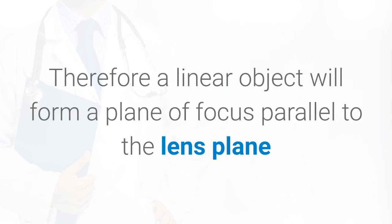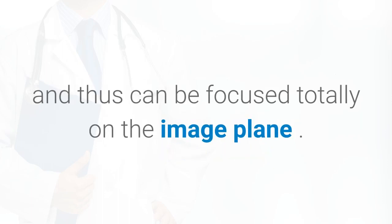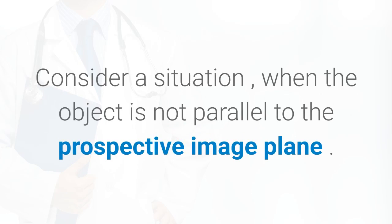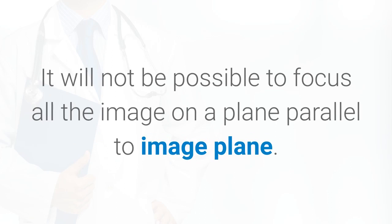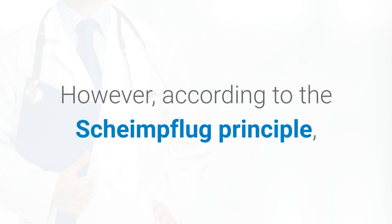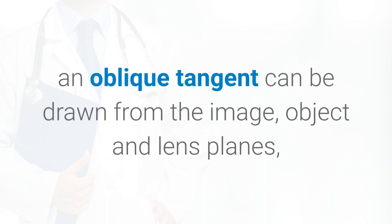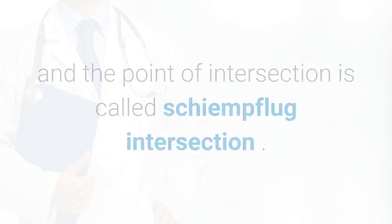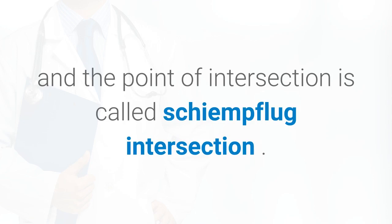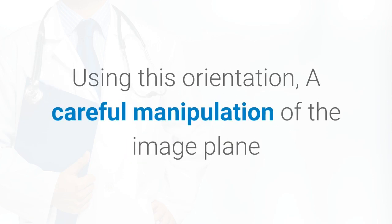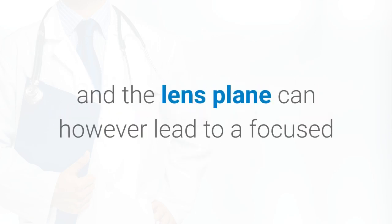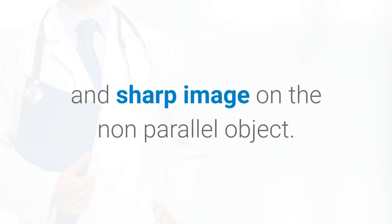In an ideal scenario, the lens plane and the image plane are parallel; therefore a linear object will form a plane of focus parallel to the lens plane and can be focused totally on the image plane. When the object is not parallel to the prospective image plane, it will not be possible to focus all the image on a plane parallel to the image plane, leading to image distortion. However, according to the Scheimpflug principle, an oblique tangent can be drawn from the image, object, and lens planes, and a careful manipulation of the image and lens planes can lead to a focused and sharp image of the non-parallel object.